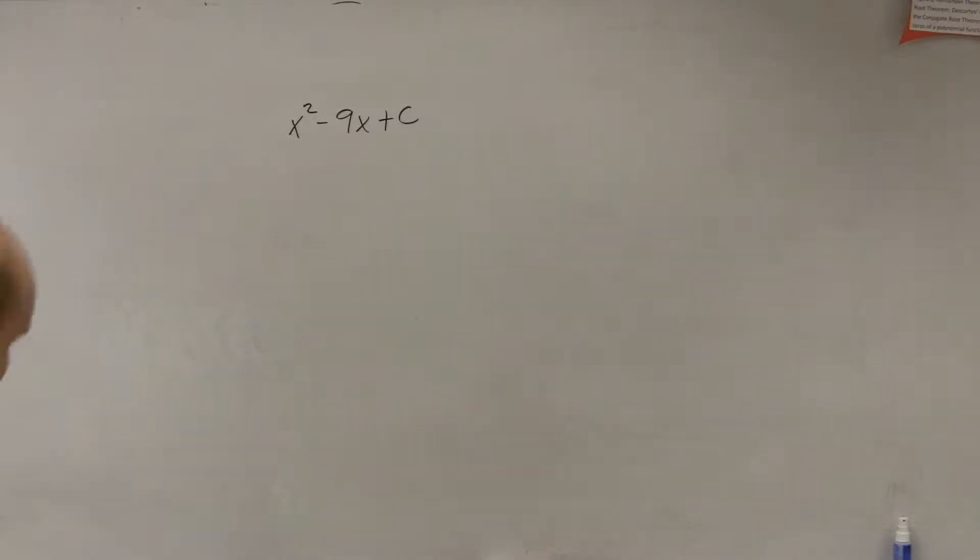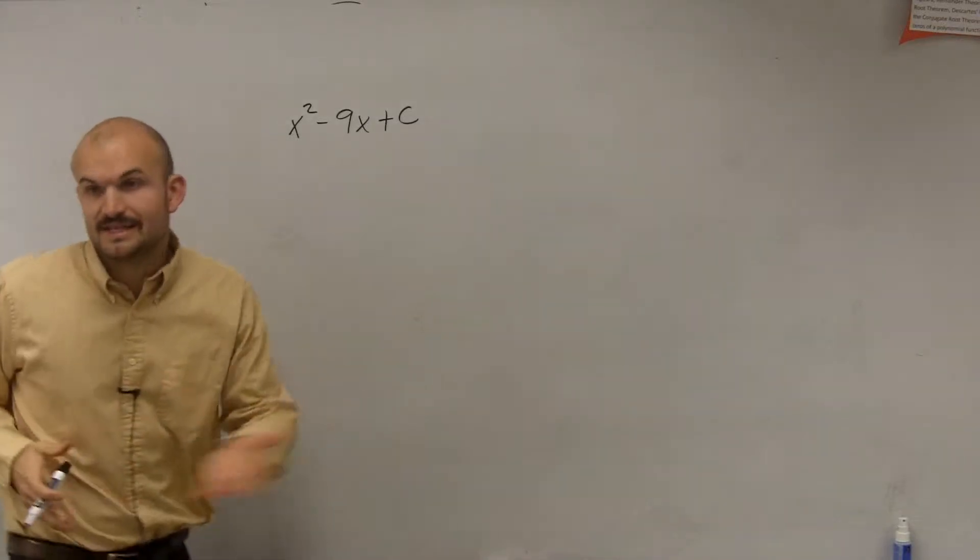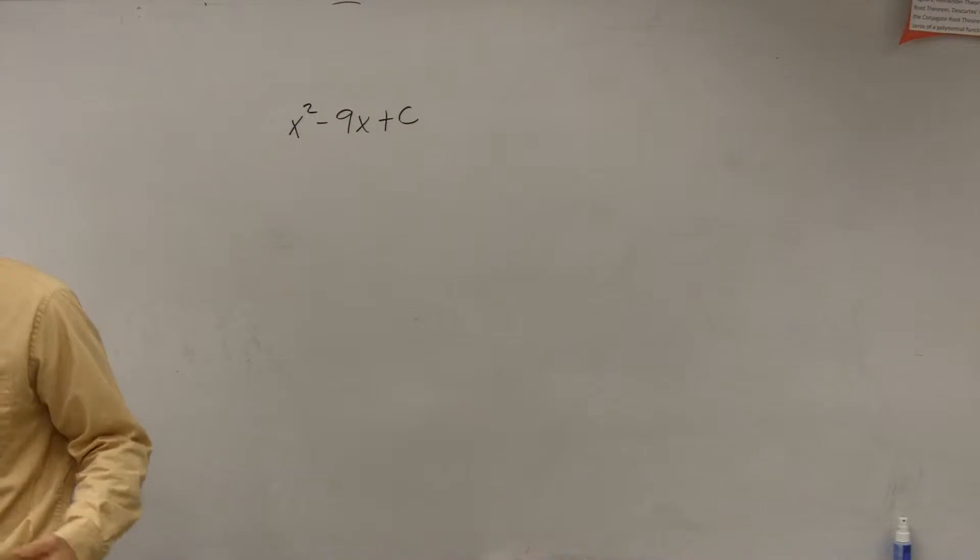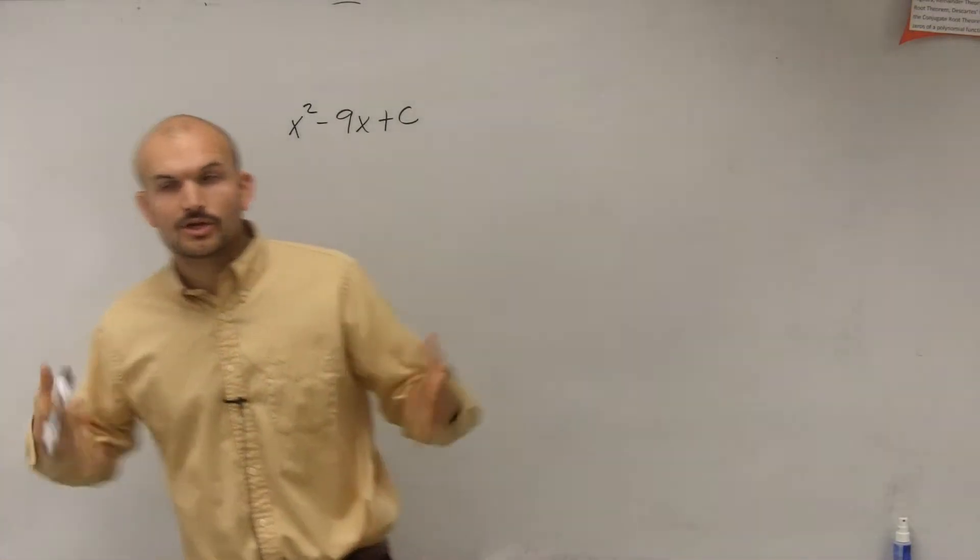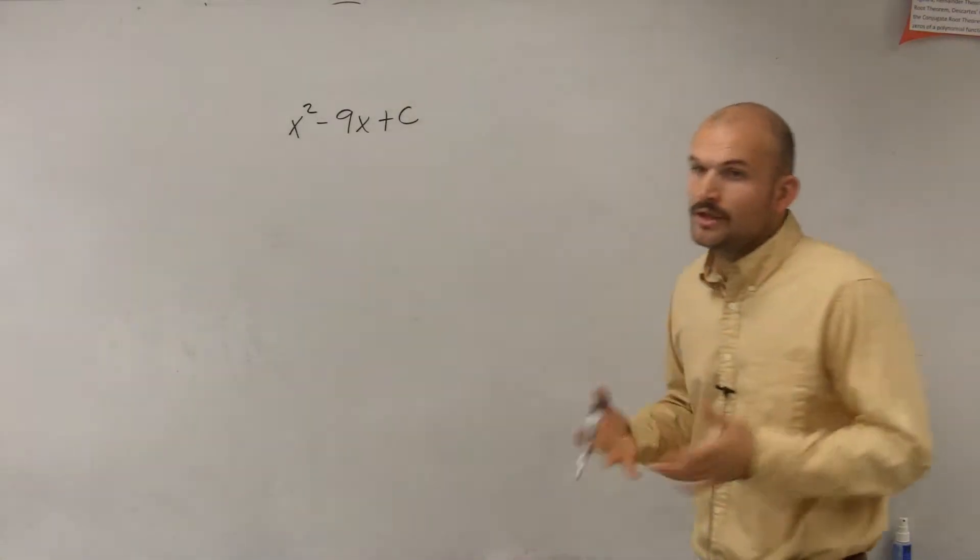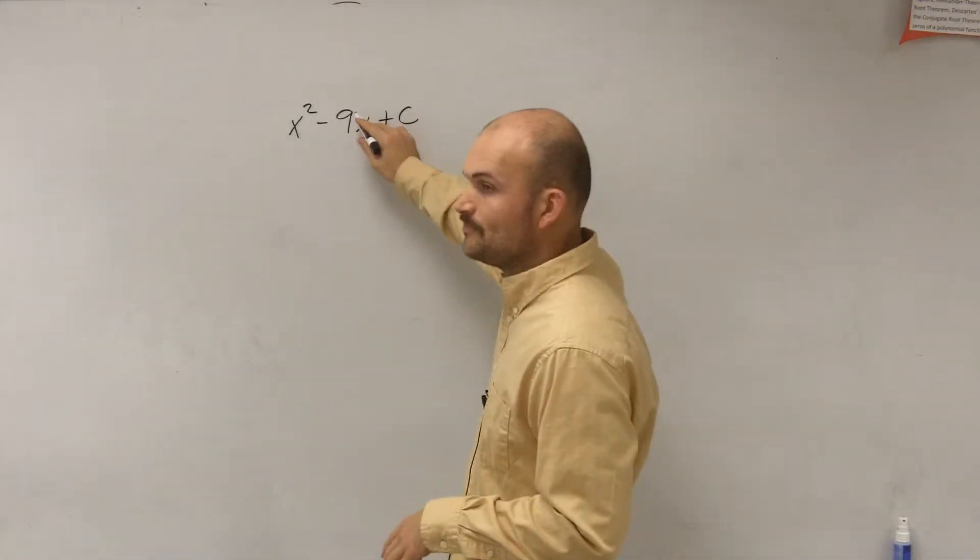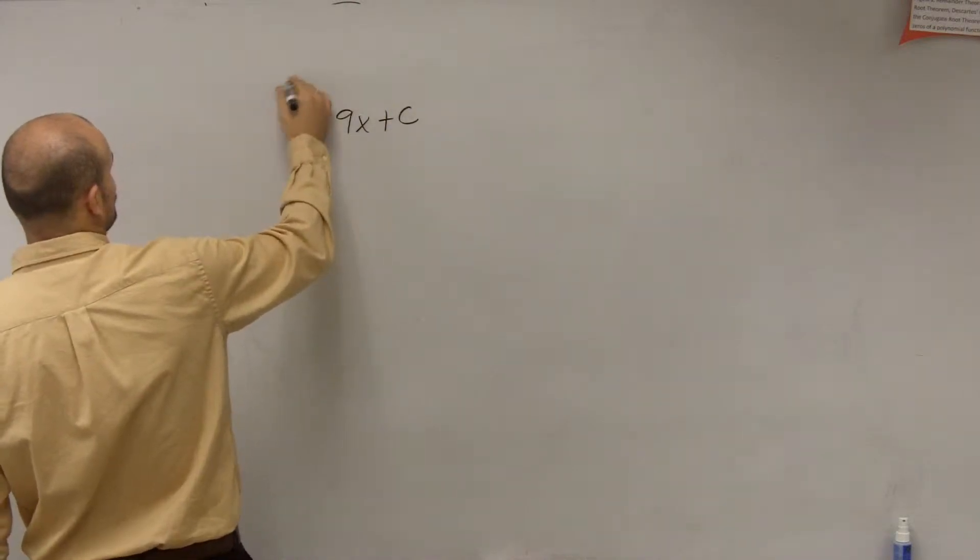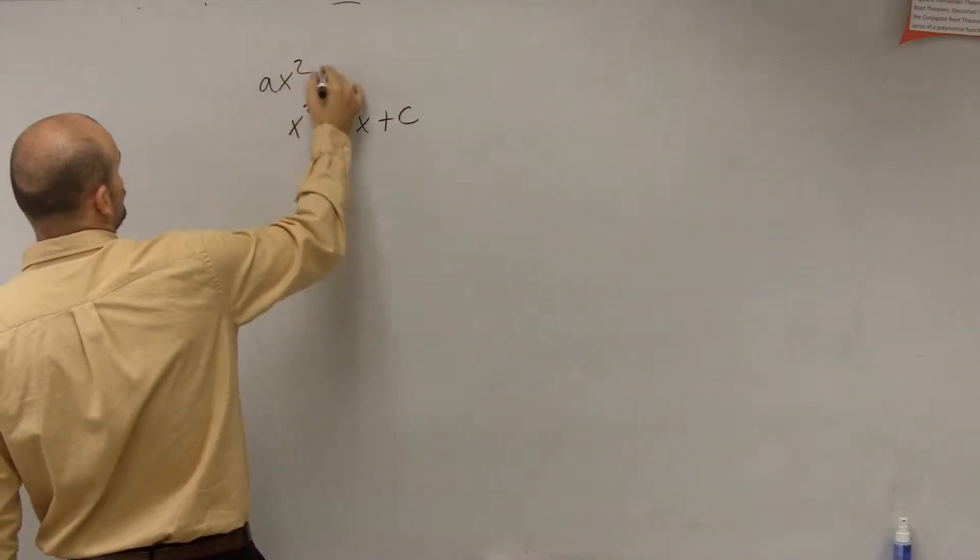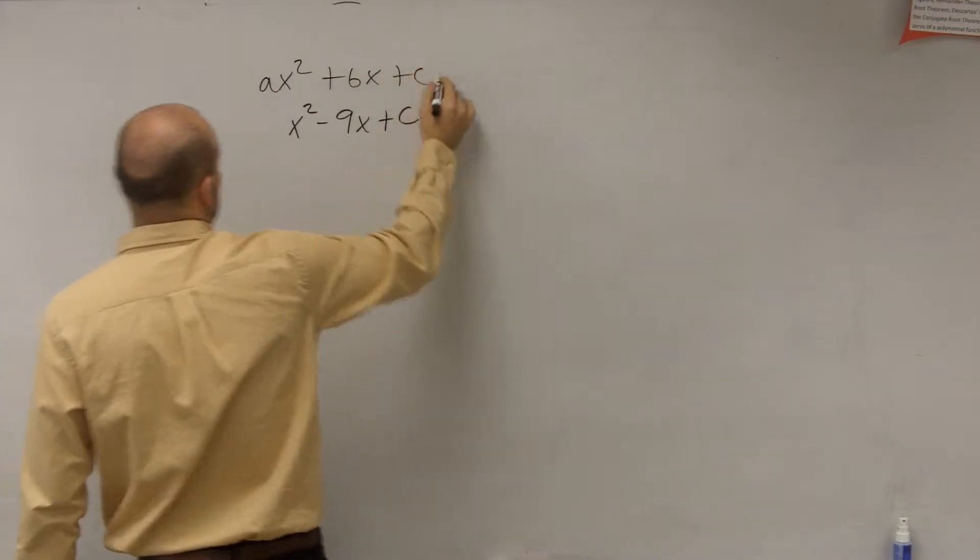All right. So for this problem, what it's asking us is to find the value of c that's going to complete the square. When we mean complete the square, we mean create a perfect square trinomial. So to create the perfect square trinomial, let's write this as a quadratic expression: ax² + bx + c.